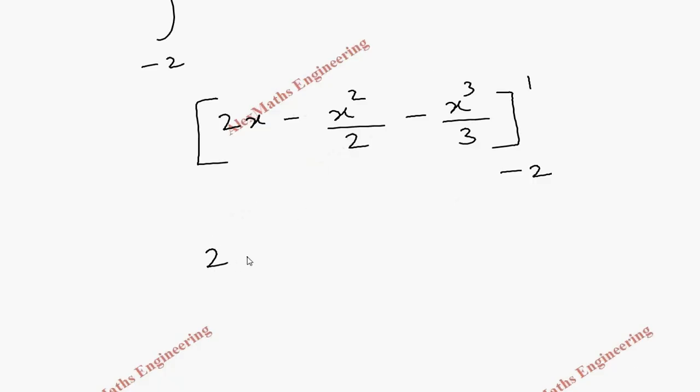When I substitute the upper limit, we get 2 - 1/2 - 1/3 minus, when I substitute the lower limit, this becomes -4 and this becomes -2², so minus 2 squared is 4, 4/2 is 2, then -8/3. But there is a minus outside. When I cube, another minus becomes plus now.